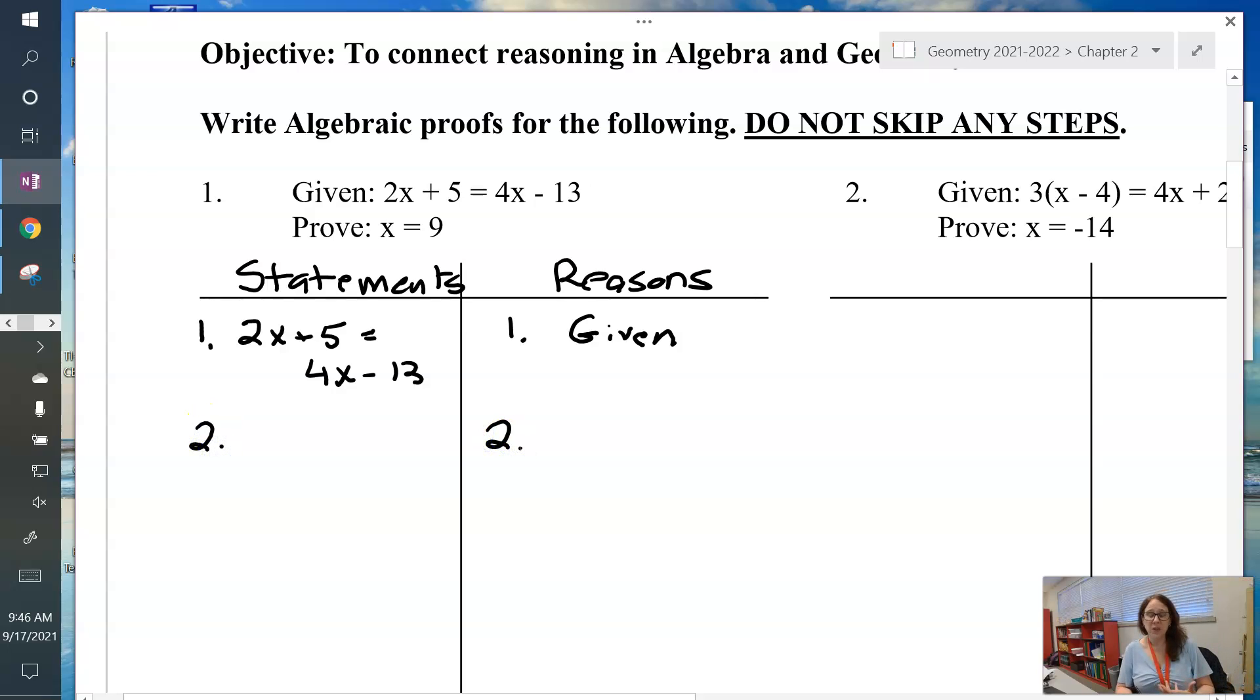You have to start someplace, so that's what the given is for. Now I'm going to solve this equation just like I would back in Algebra 1, and the only difference is I'm going to write down my reasons for doing it. The first thing I'm going to do is subtract 5 from both sides. Since I'm doing it from both sides, that's subtraction property of equality. When I subtract 5 from both sides, I get 2x equals 4x minus 18.